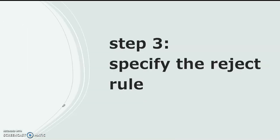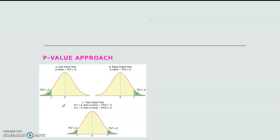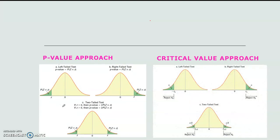The next step is to specify the rejection rule. There are two things we have to consider. The first is whether to use a p-value approach or the critical value approach. It is our prerogative to choose which approach we want to use. We will discuss each of the methods further in the next video.